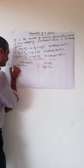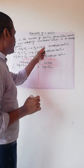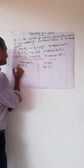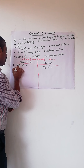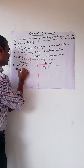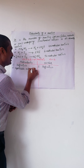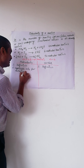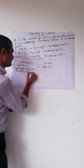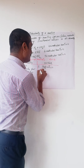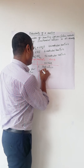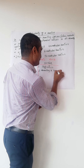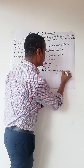The second difference: molecularity is applicable only for elementary reactions — it has no meaning for complex reactions. But order is applicable both for elementary and complex reactions.